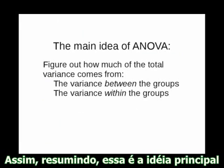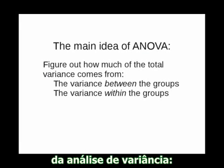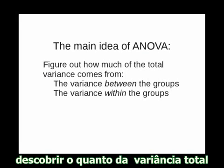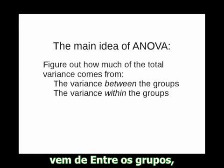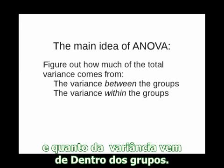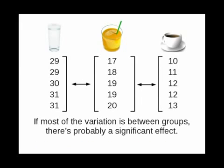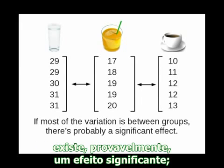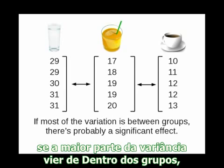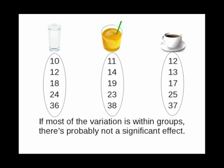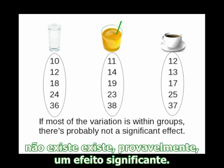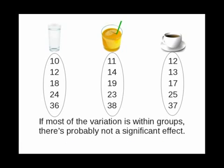So to recap, here's the main idea of analysis of variance: you figure how much of the total variance comes from between the groups, and how much comes from within the groups. If most of the variation is between groups, there's probably a significant effect. If most of the variation is within groups, there's probably not a significant effect.